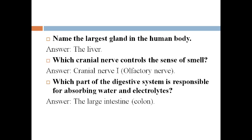Name the largest gland in the human body: the liver. Which cranial nerve controls the sense of smell? That is cranial nerve 1, the olfactory nerve. Which part of the digestive system is responsible for water and electrolyte absorption? That is the large intestine.